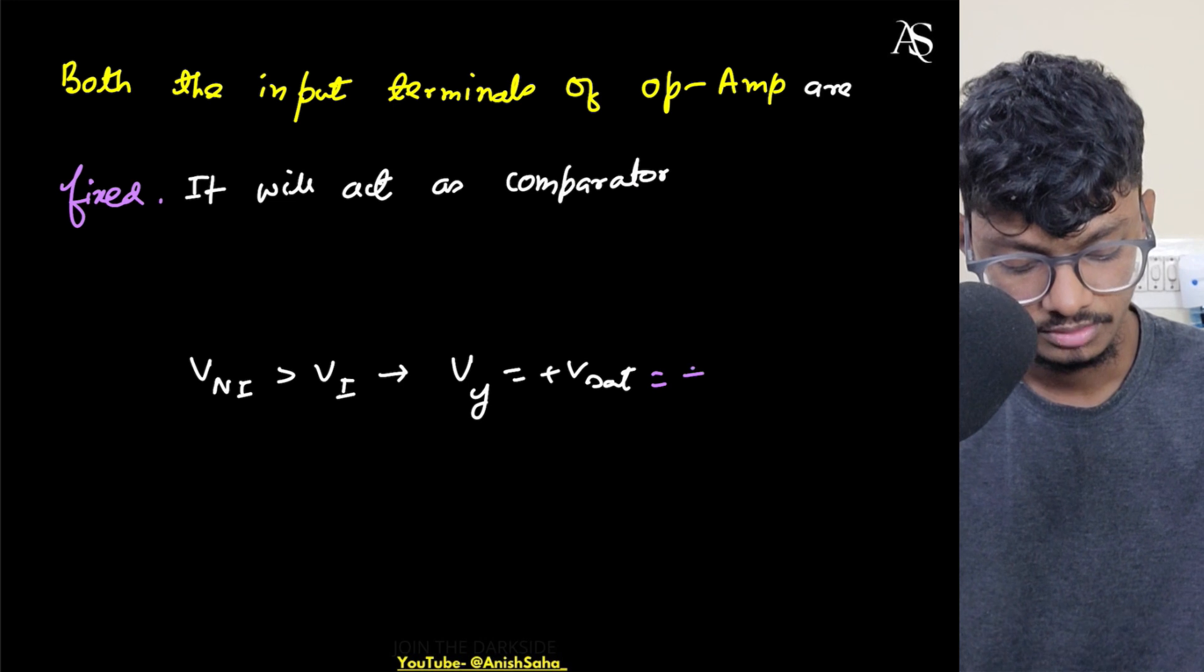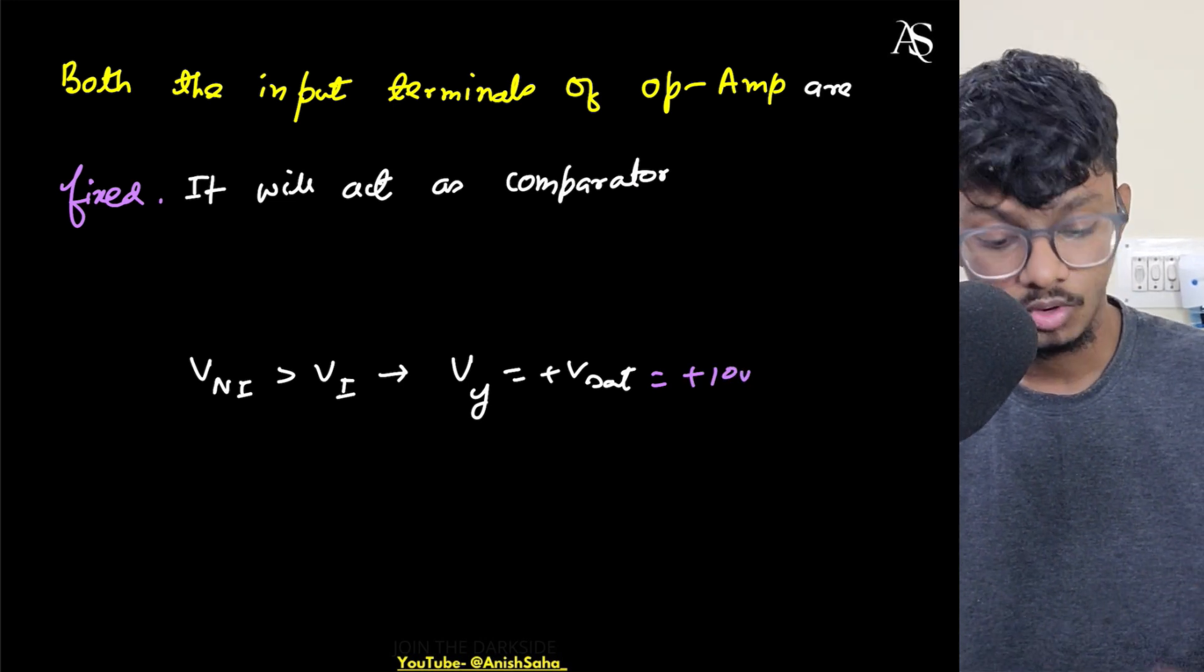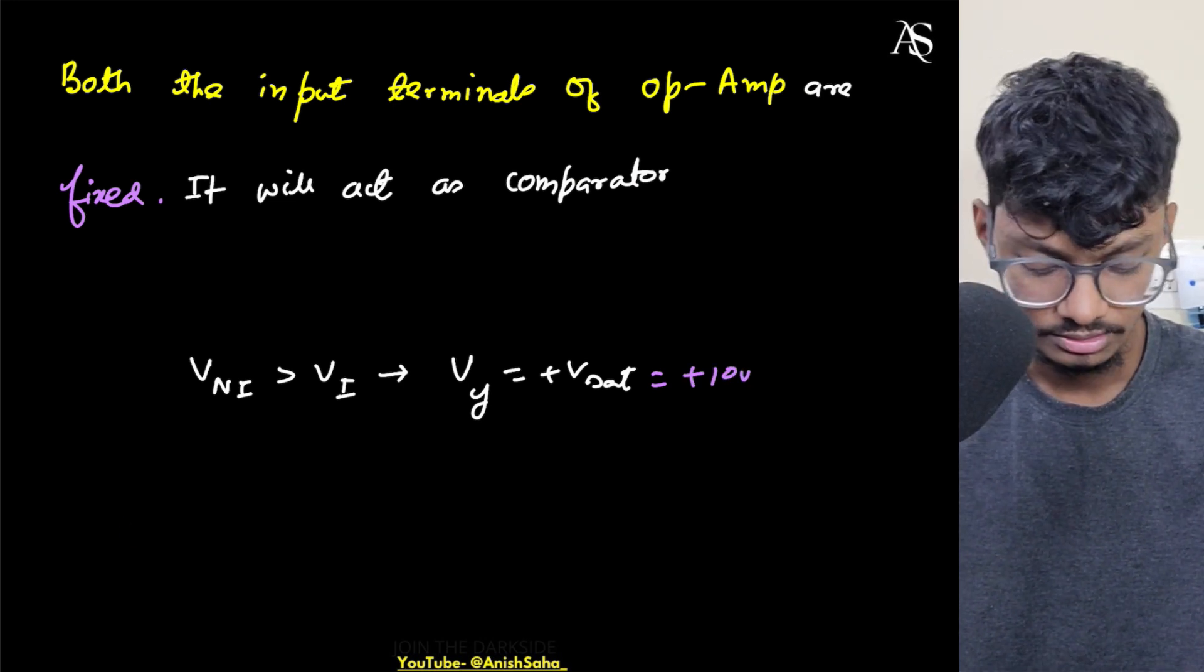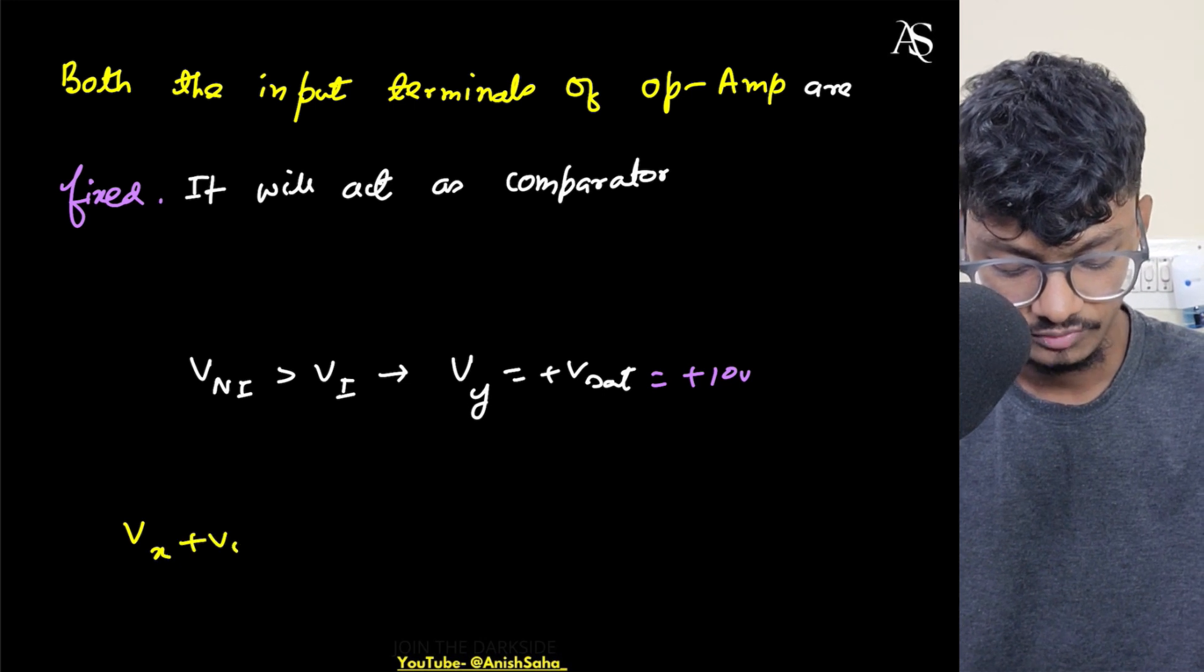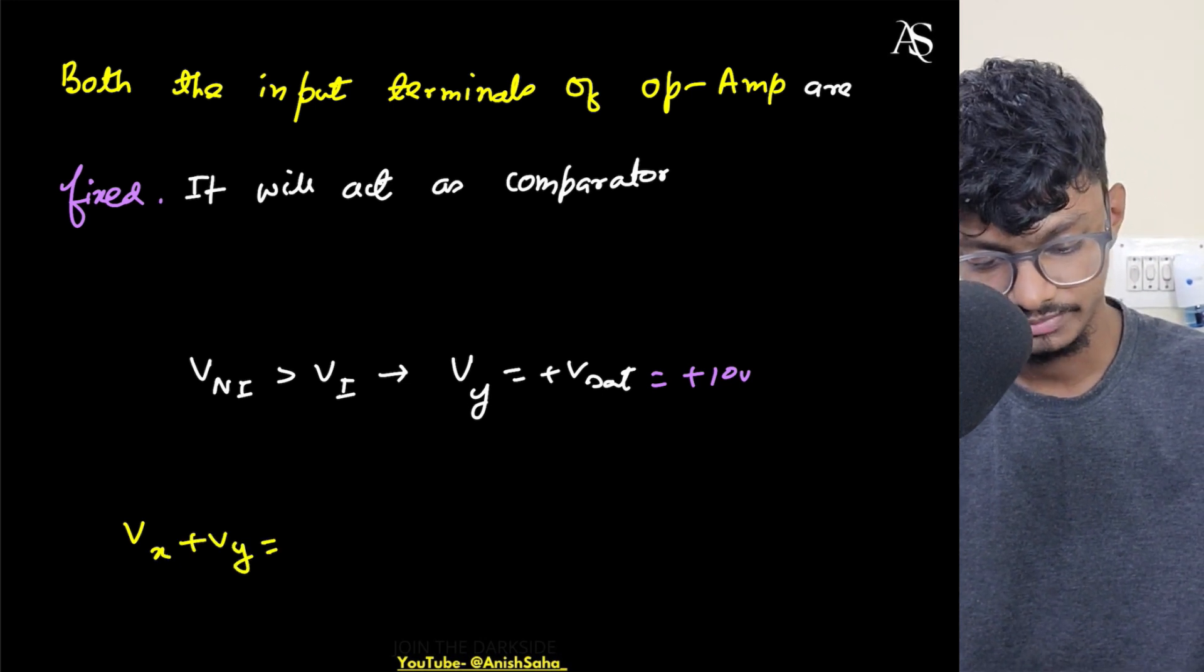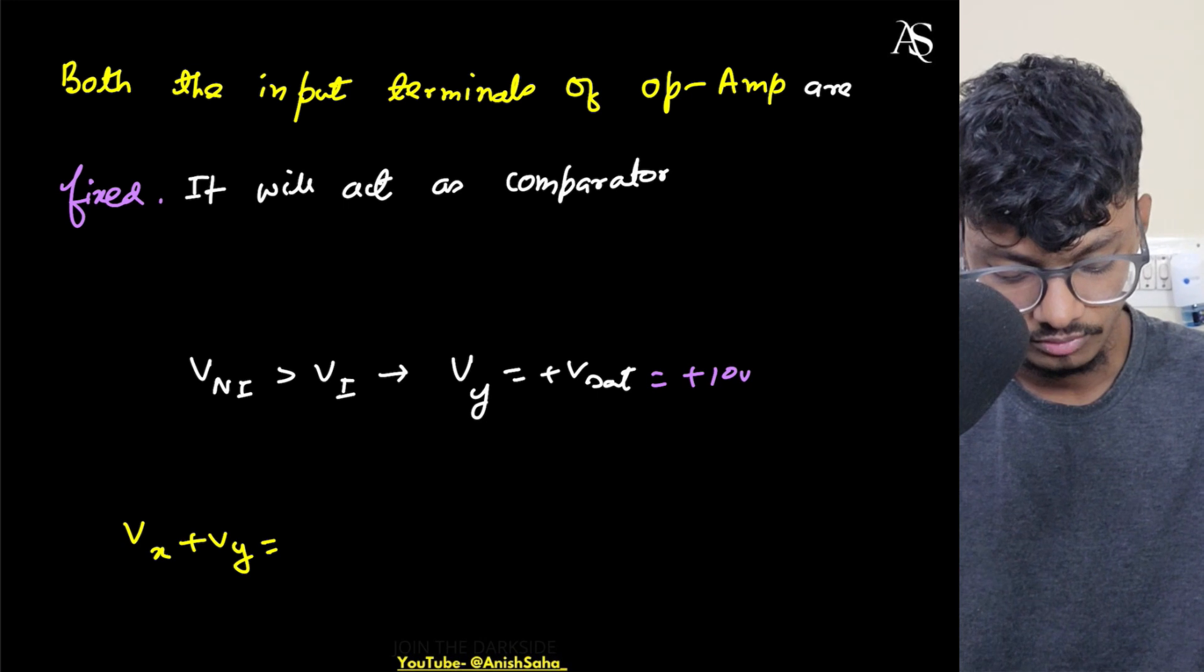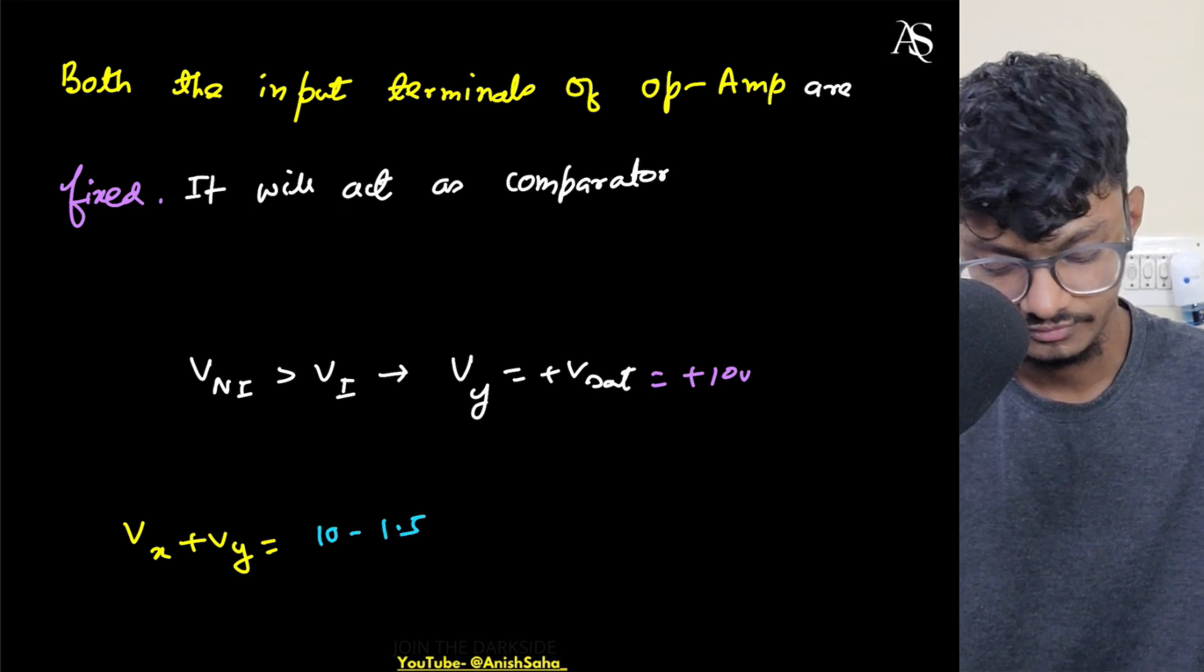So what will be my answer? What will be my Vx + Vy? Vx + Vy will be simply 10 minus 1.5, plus 10 equals to 8.5 volts. So this will be the answer to my question.